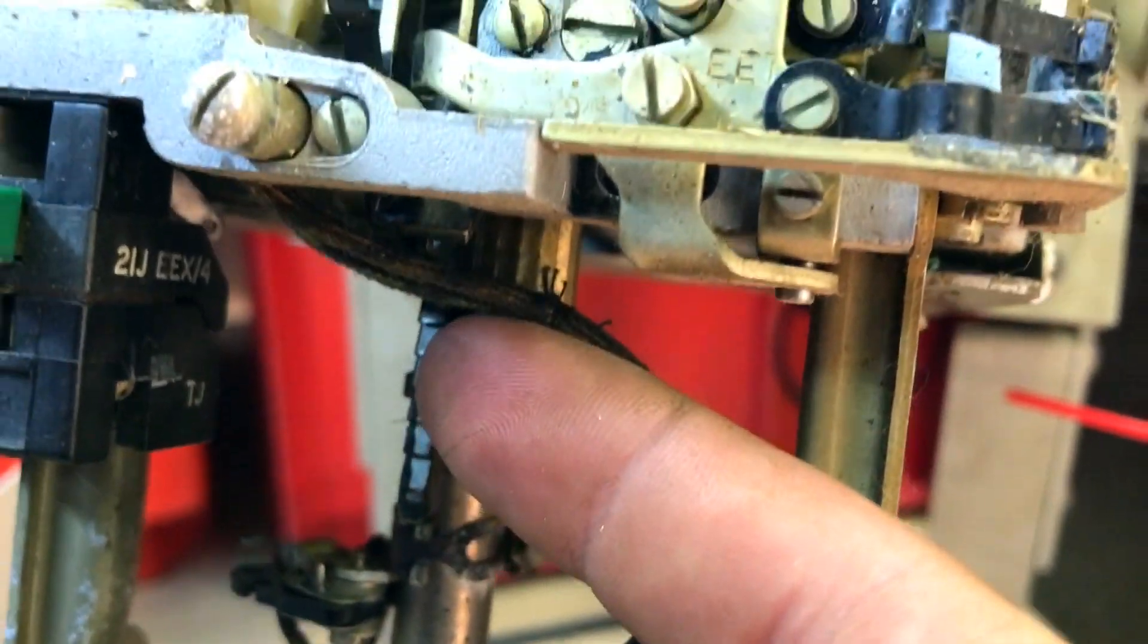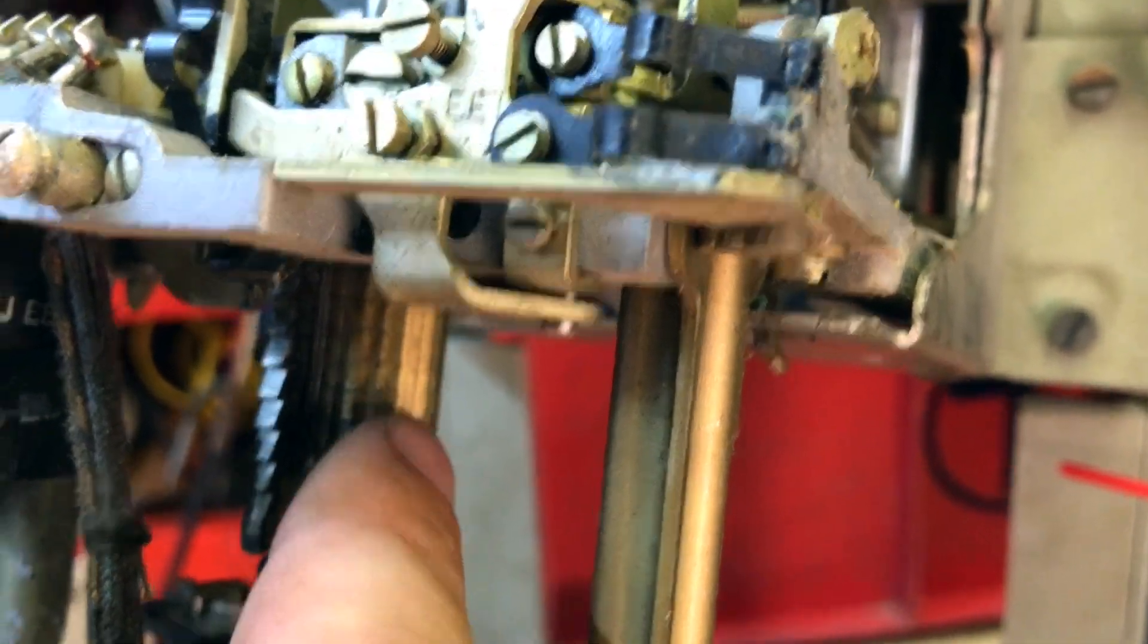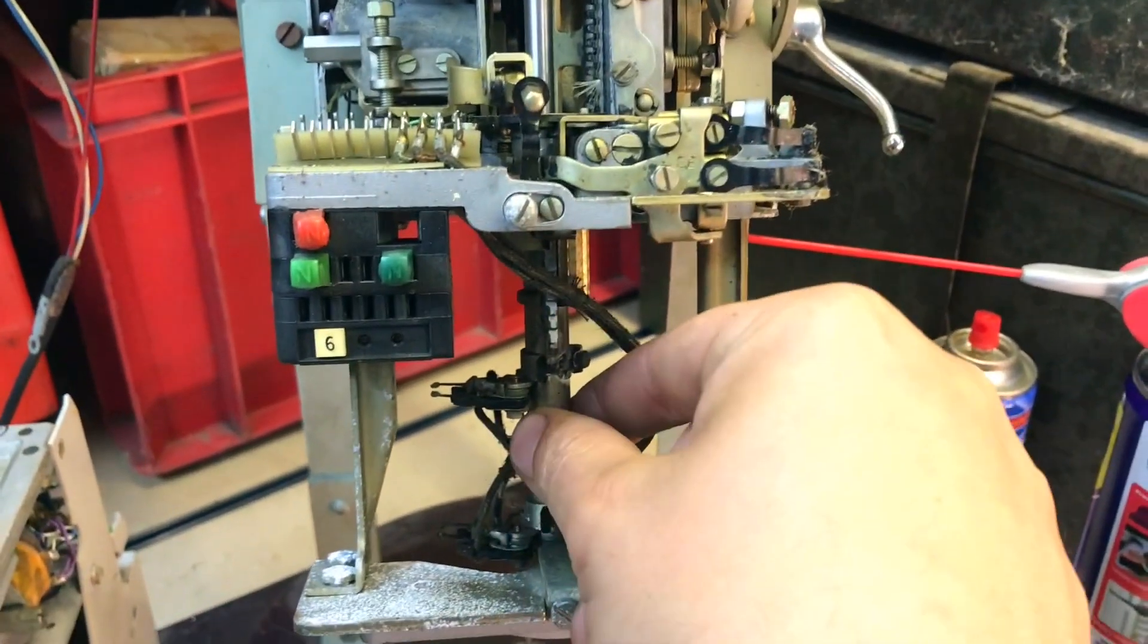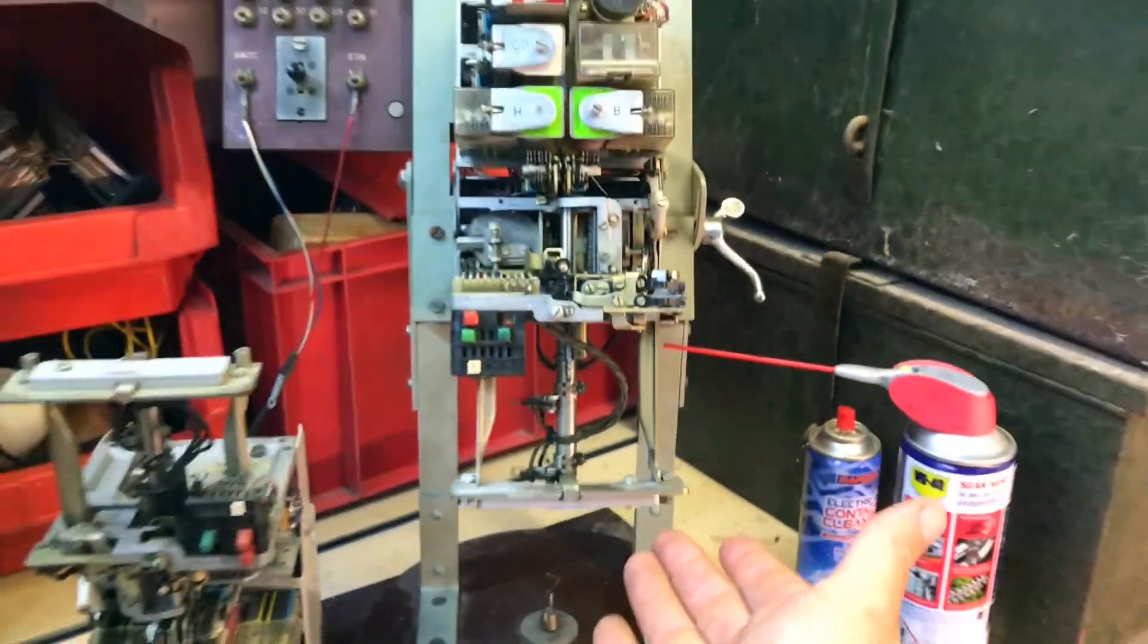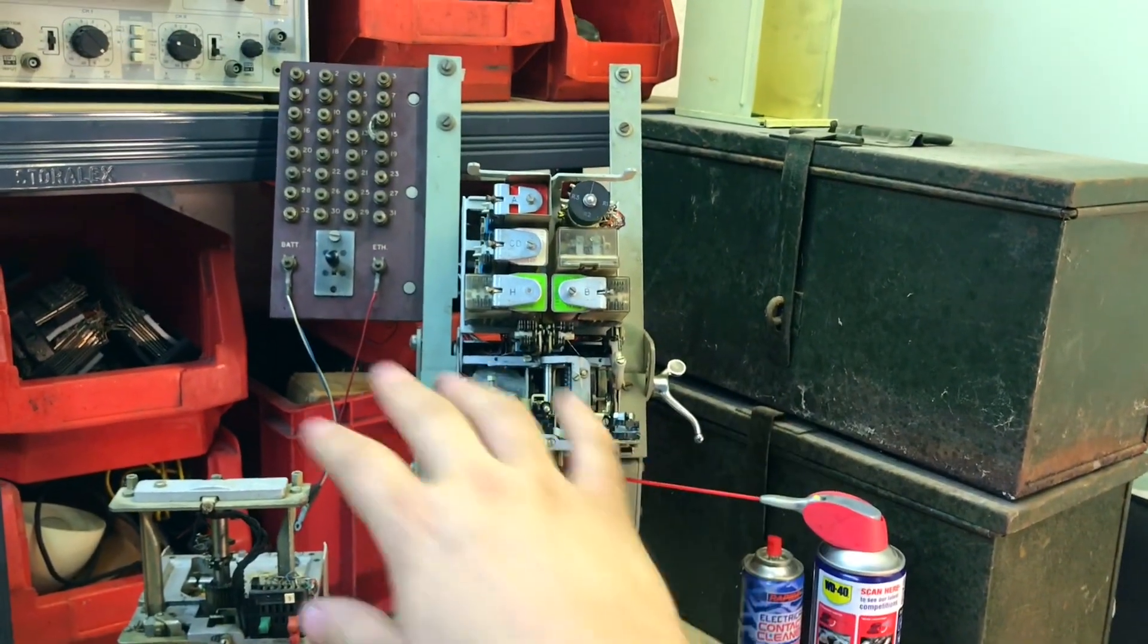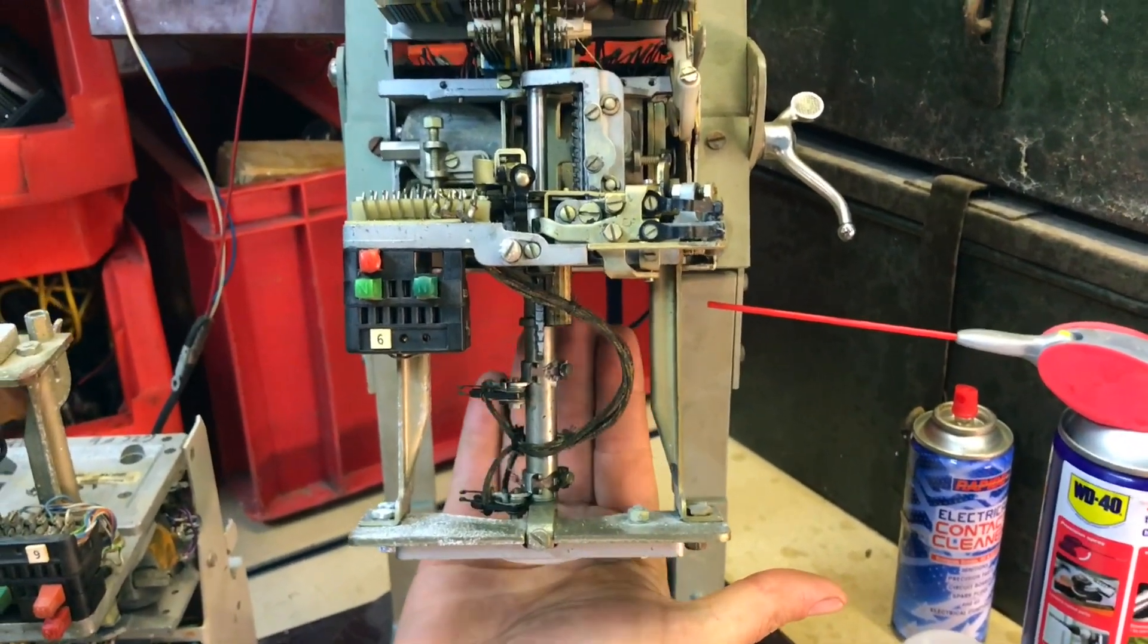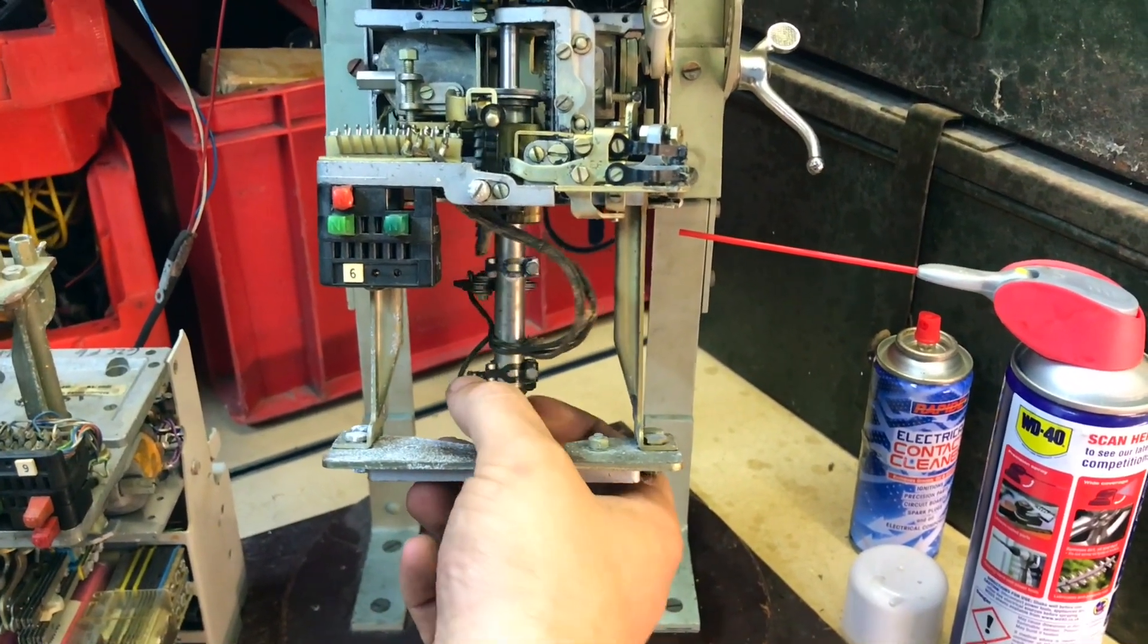And then we get down to all of the mechanical moving bits down here. There's some ratchets and you see these toothed bits here. This is a vertical ratchet. And just in there, you see around here, that's the rotary ratchet. And that's what moves this carriage up and down the shaft here and around. That's where you get a two motion selector from because it goes up and across.